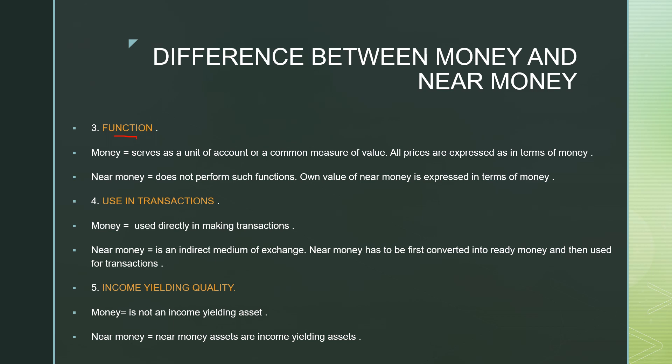The third difference is function. Money serves as a unit of account — it is a common measure of value, the common denominator to measure the value of all articles. All prices are expressed in terms of money, whereas near money does not perform such functions. In fact, the own value of near money is itself expressed in terms of money — for example, the value of a bond of 5 lakh is stated in monetary terms.